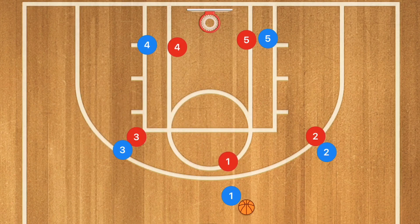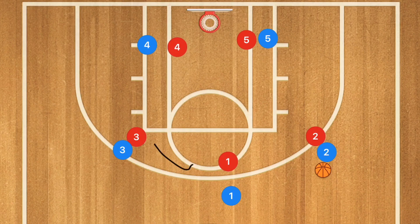It is totally up to you how you like to run your offense. The reason why I like to go to a motion offense — something like a pass-and-screen-away or a pass-and-screen-for offense — is because with a motion offense it continues through after the set plays that we run.